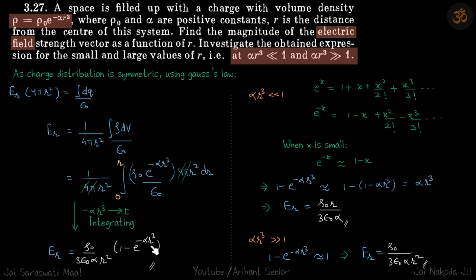We have a term e raised to minus x here, which we simplify as 1 minus x because that term is very small. So 1 minus e raised to minus αr³ becomes 1 minus (1 minus αr³), which equals αr³. Putting this in our original field equation gives us the answer. We see that when r is very small, near the origin, the field is proportional to r.